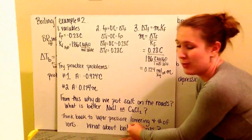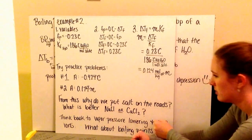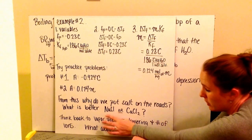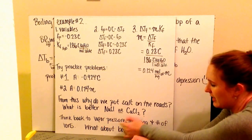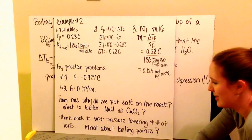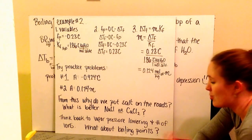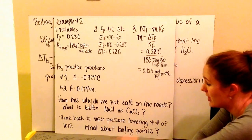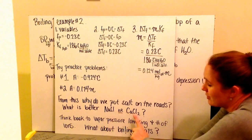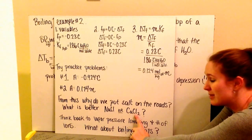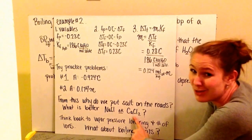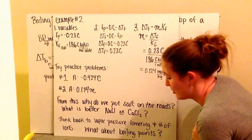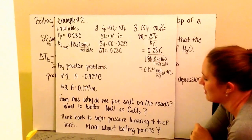From these problems, we can see why we put salt on roads. A better question is which is better: sodium chloride or calcium chloride? At the store in winter, you'll see both options. Calcium chloride is more expensive, but it actually works better because of how many ions it dissociates into. This also relates back to vapor pressure lowering and the number of ions in solution.